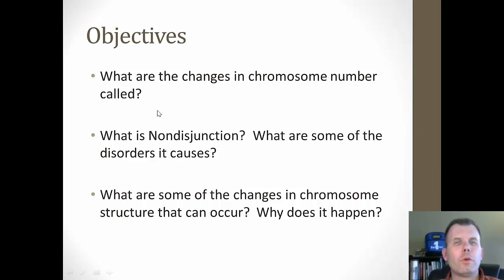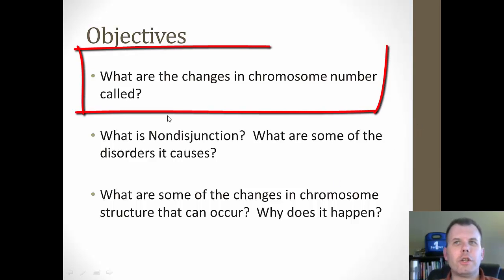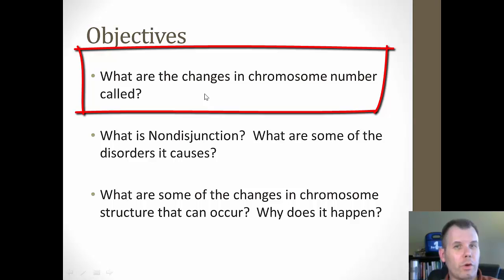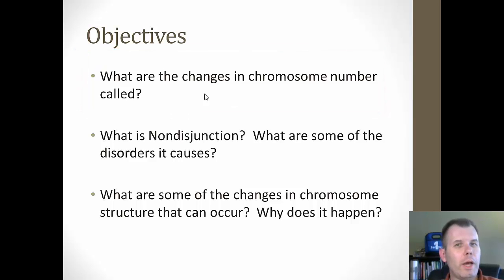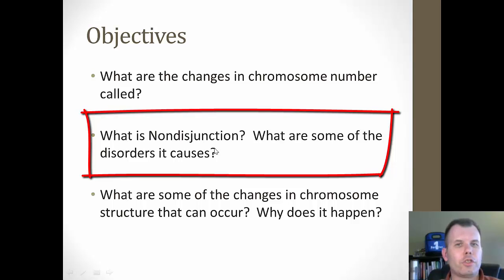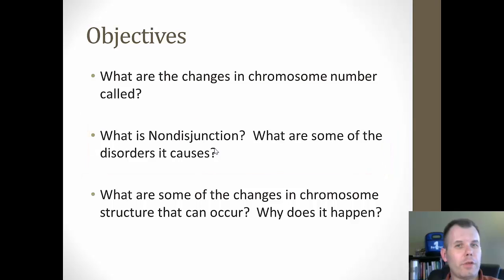First we're going to look at what changes can occur in the chromosome number and what these are called. Typically you have a normal number of chromosomes — for us we have 46. But what happens if we get one too many or one too few? What is that called and why does it happen? The process that causes that is called non-disjunction — basically where the chromosomes don't divide evenly during the process of meiosis. We're going to look at where that can take place in meiosis and why it happens.